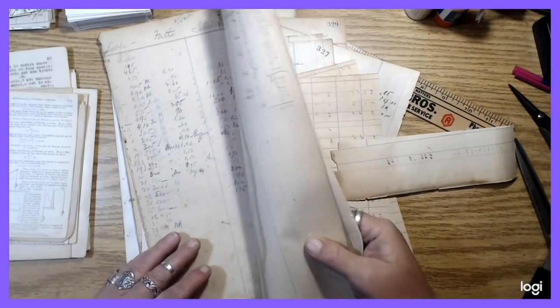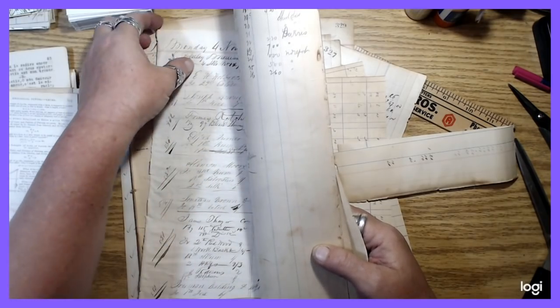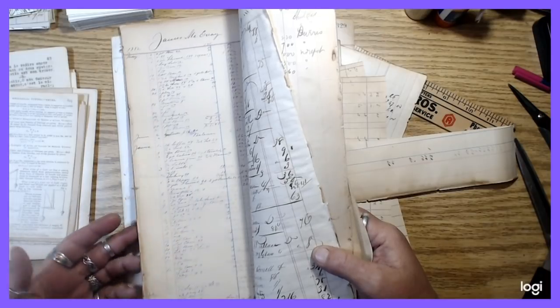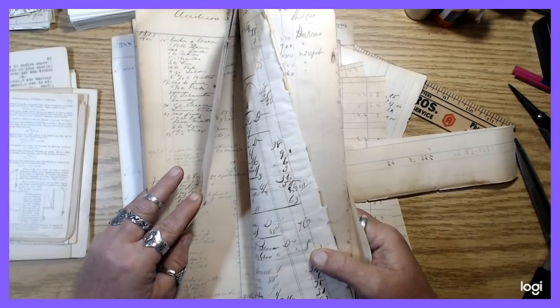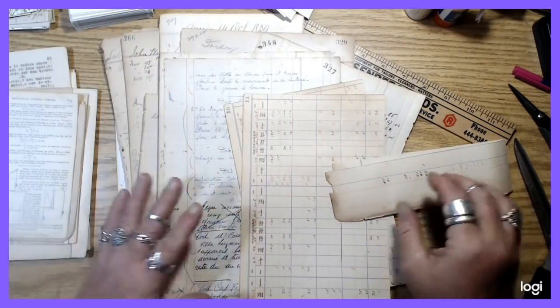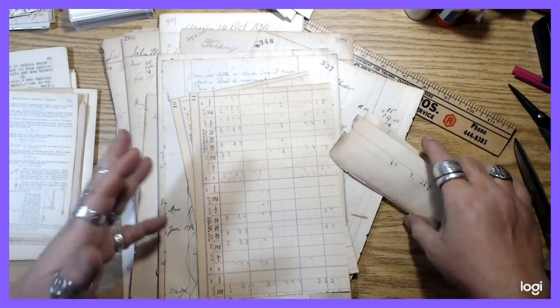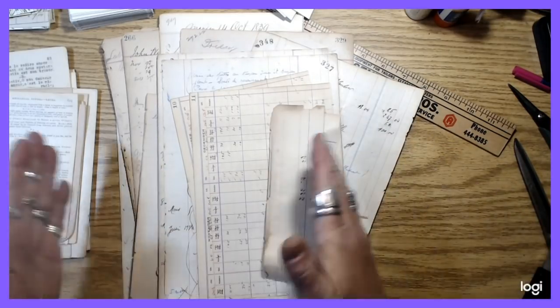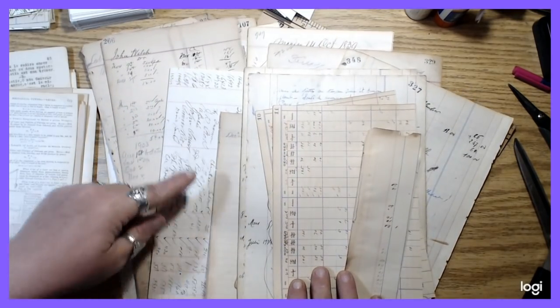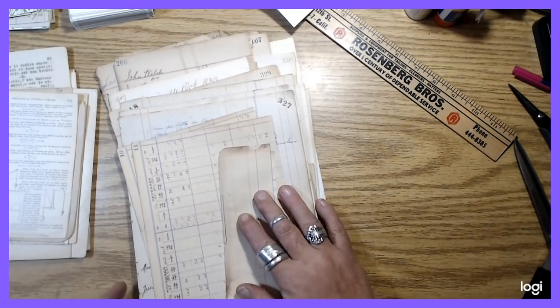These are all pretty old ledgers, some with numbers and some with lots of scripty decorative handwriting and stuff like that. Different colors too. I like to use different tones of color of ledger. So not even really looking at the content so much as the tone and the pattern that the writing creates.